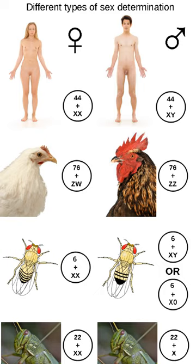The sexual differentiation is generally triggered by a main gene, a sex locus, with a multitude of other genes following in a domino effect. In other cases, the sex of a fetus is determined by environmental variables, such as temperature. The details of some sex determination systems are not yet fully understood.